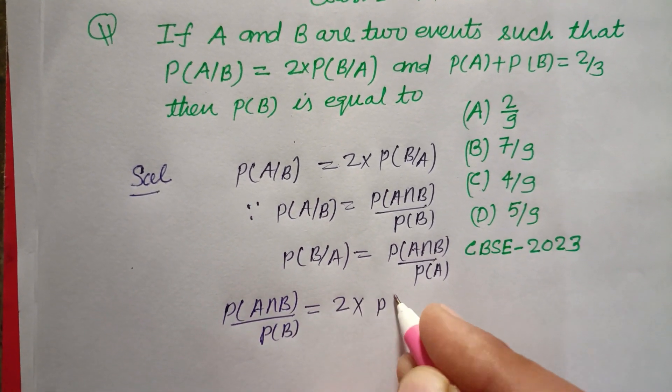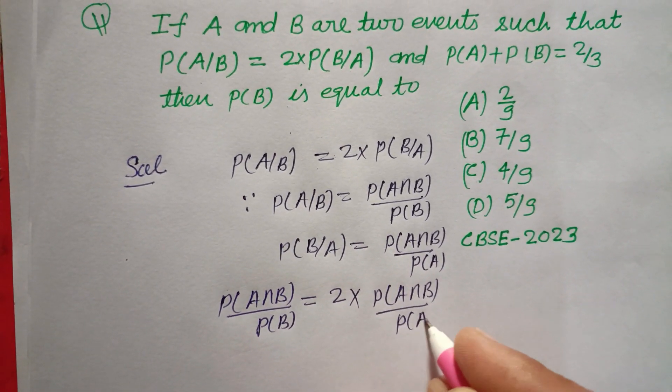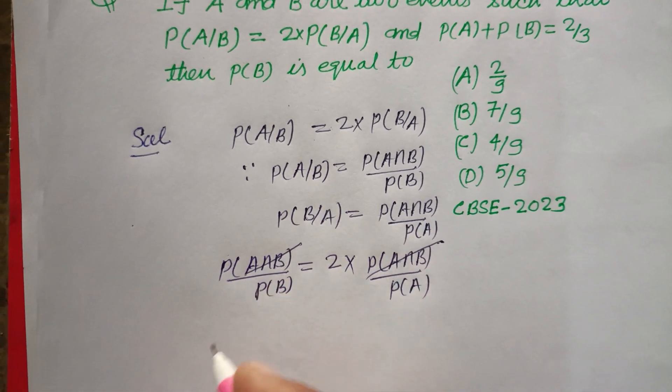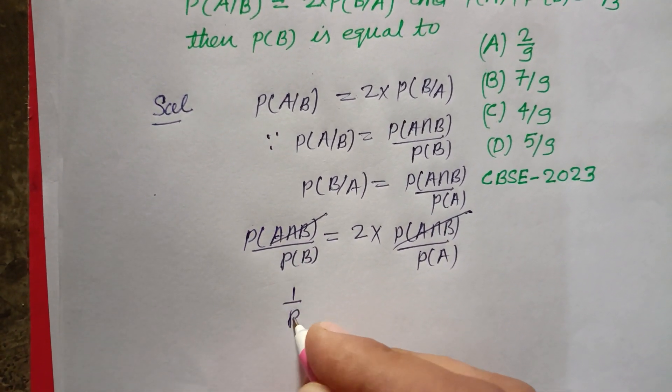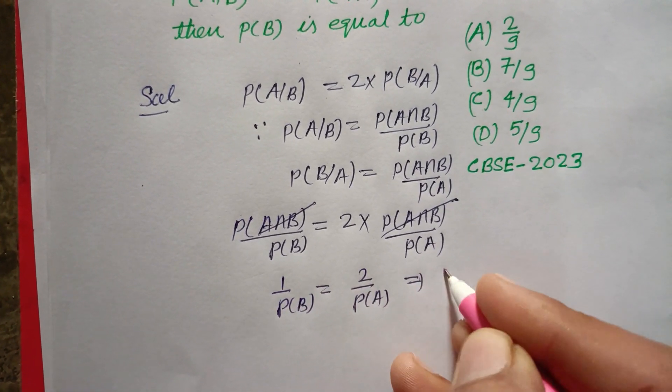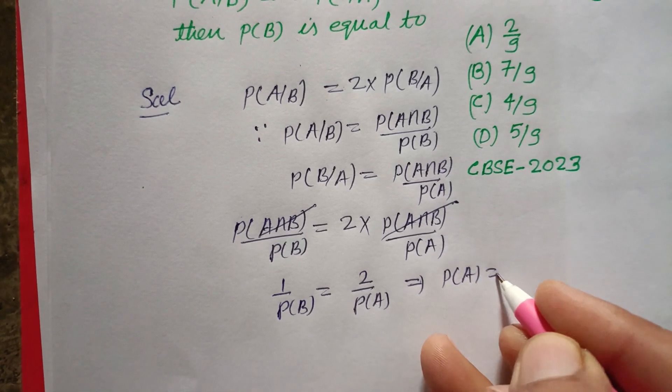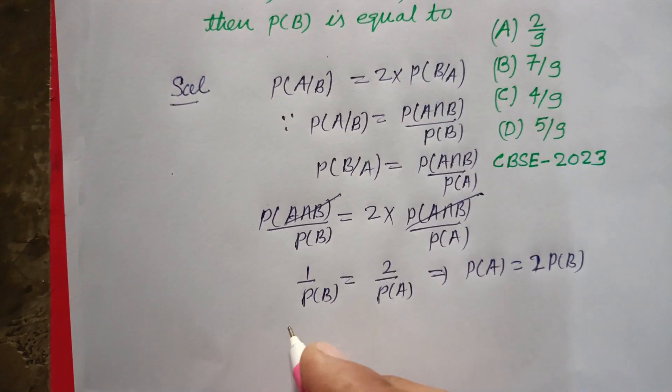Dividing, we get 1/P(B) = 2/P(A), which means P(A) = 2 times P(B). Now it is given that P(A) + P(B) = 2/3.